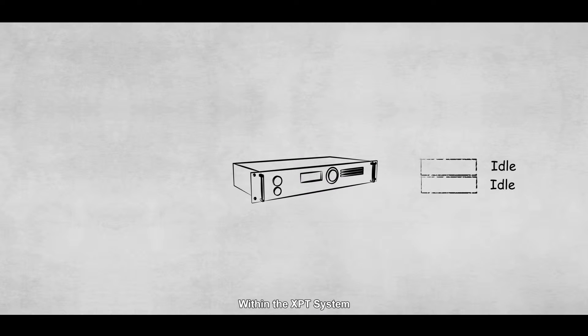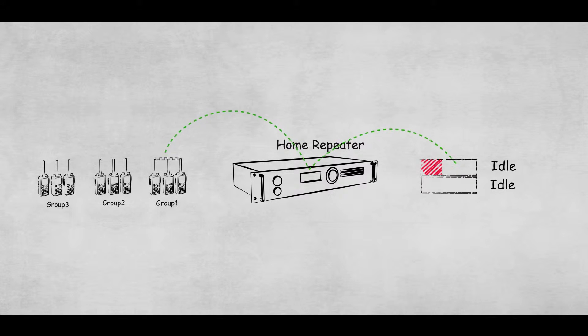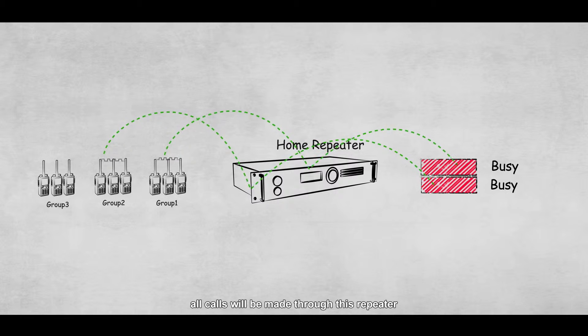Within the XPT system, groups of users will be allocated to a home repeater. When the home repeater is idle, all calls will be made through this repeater.